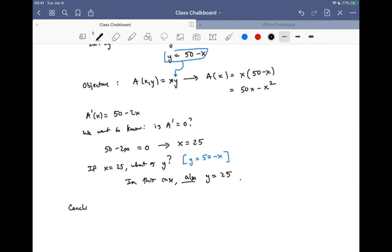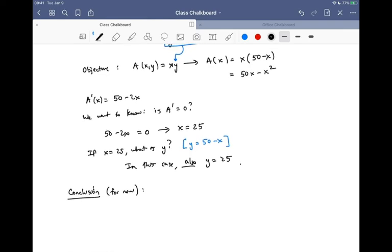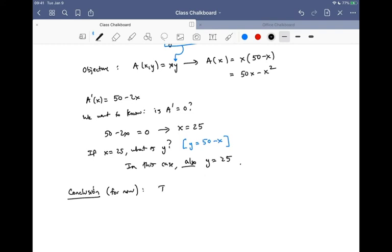And we want to know, is a prime ever equal to zero? So 50 minus 2x was our derivative, let's set that equal to zero and solve, and we end up getting x equals 25. So if x equals 25, then what's y? Well, we had a nice equation from before, and so in this case, also y is 25. So the conclusion, and I'll save for now because I want to go a little deeper into this on Friday, is that the garden with maximum area is 25 meters by 25 meters. If you think briefly, that kind of makes sense. The optimum turning out to be a square in this situation maybe wasn't totally shocking.